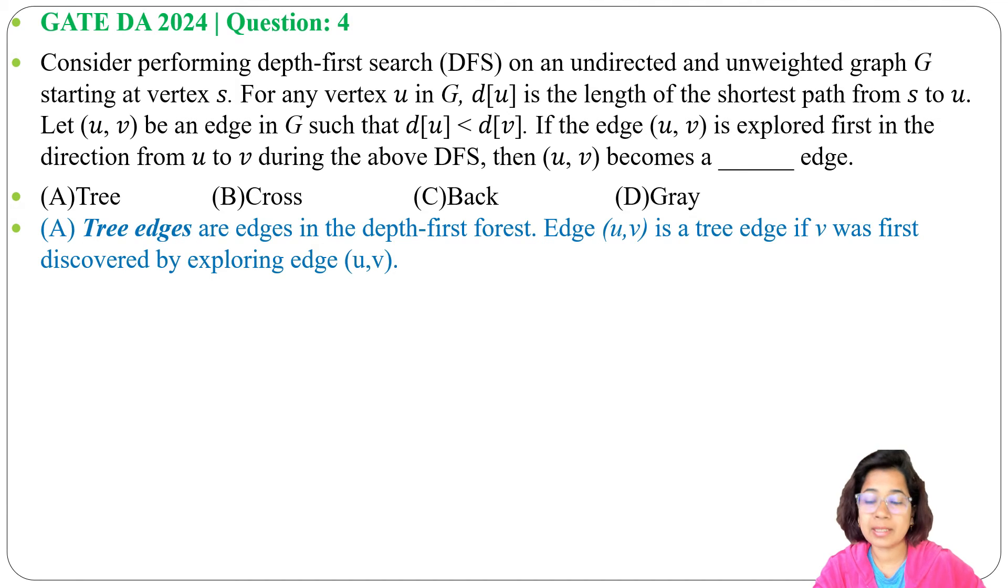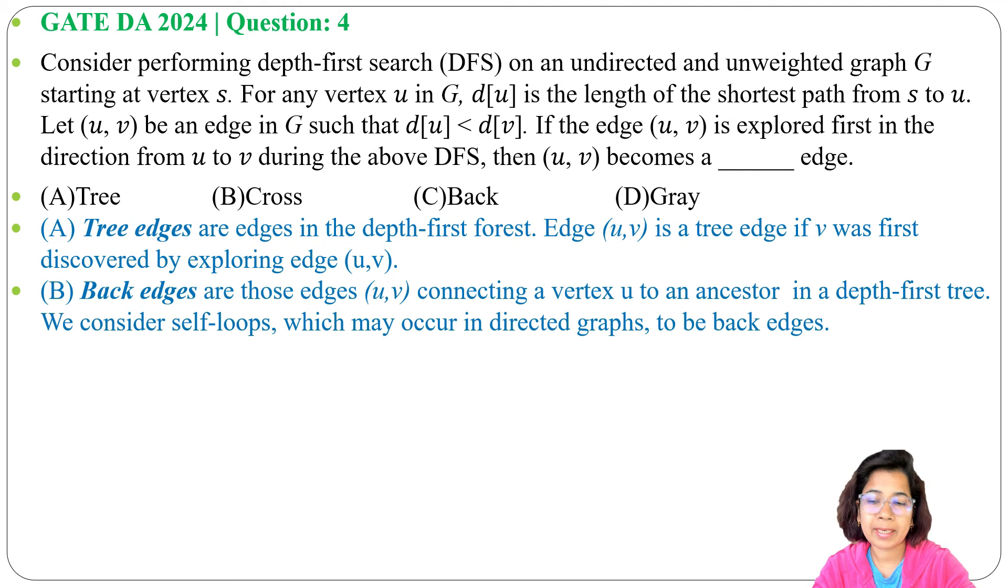Next, back edges. Back edges are those edges (u, v) connecting a vertex u to an ancestor in a depth-first tree. We consider self-loops, which may occur in directed graphs, to be back edges.